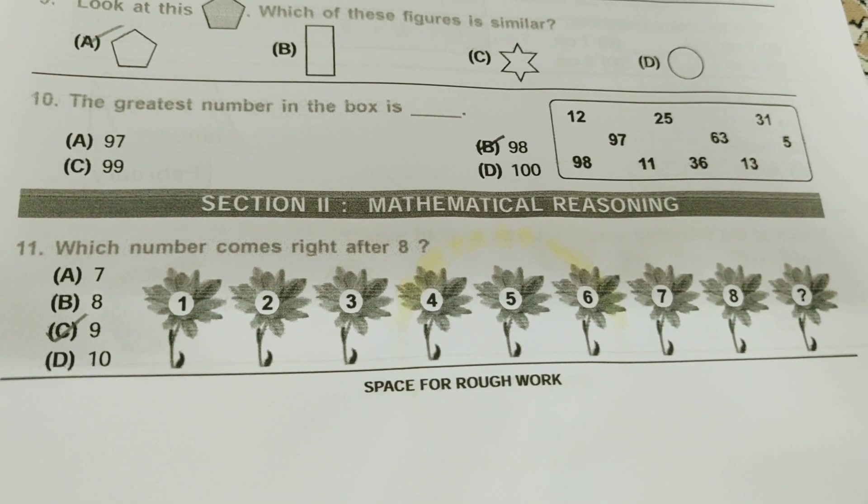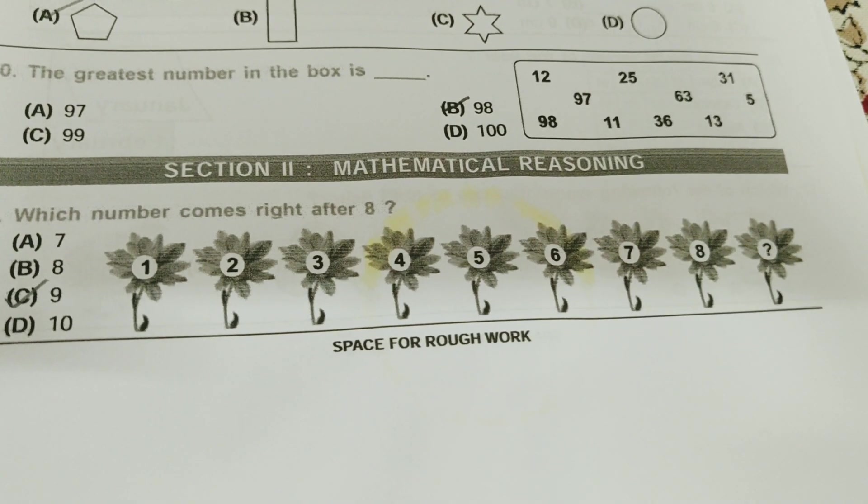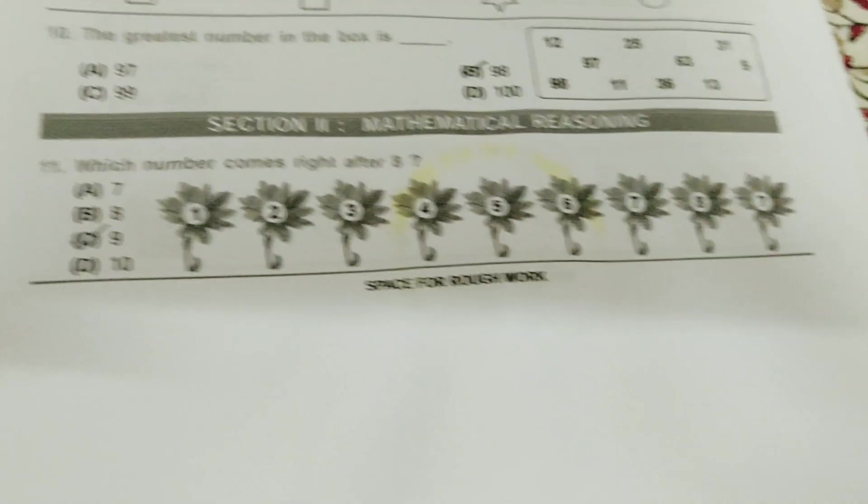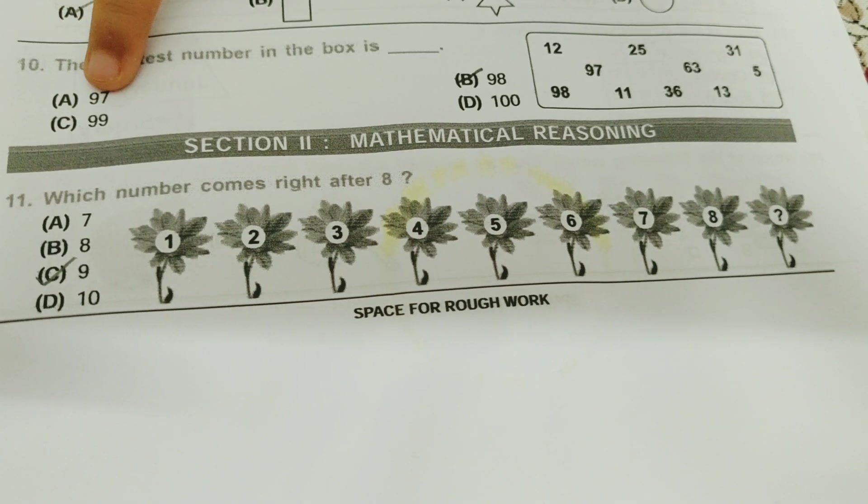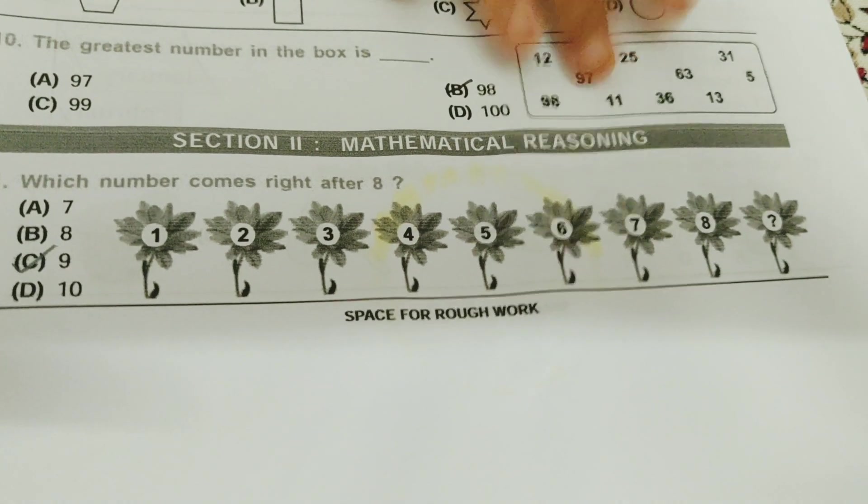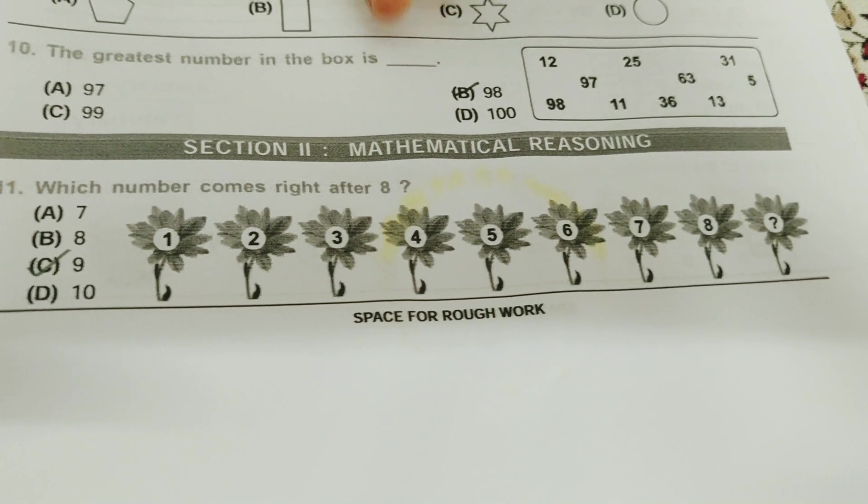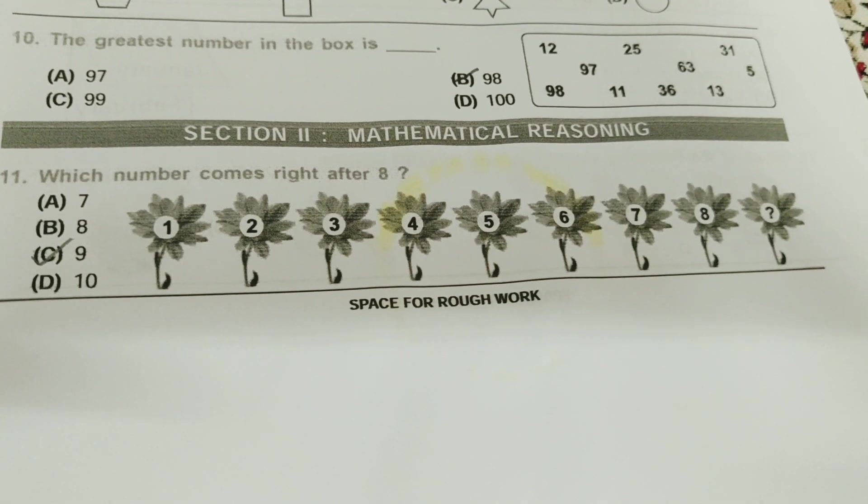The greatest number in the box is... So you just need to see the box and find out the greatest number. So I found it like this. I saw the options first. Then I saw that 99 and 100 are not there in the box. Only 97 and 98 are there in the box. And 98 is the greatest number. So I take 98, V bit.